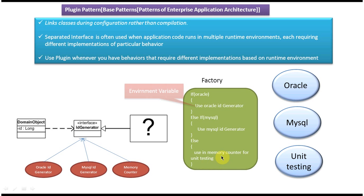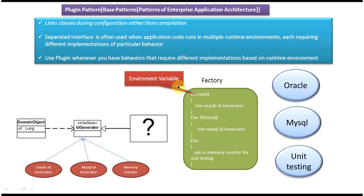What we can do is define an environment variable in a property file. We have to read whether the environment is Oracle — if it is Oracle, then use Oracle ID Generator. We can define the environment in the property file before we do compilation or take the build. If the property mentions Oracle, then automatically the Oracle ID Generator will be plugged in, and the Oracle ID generation logic will be used to generate the IDs.